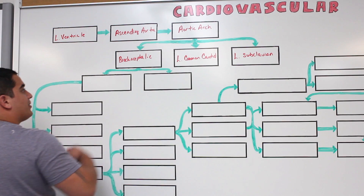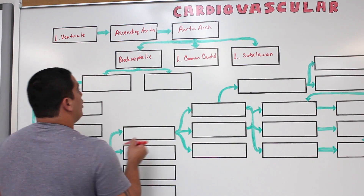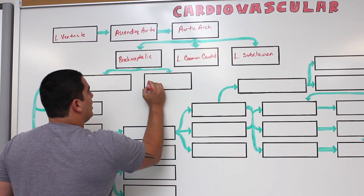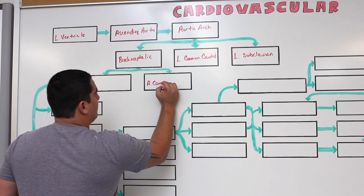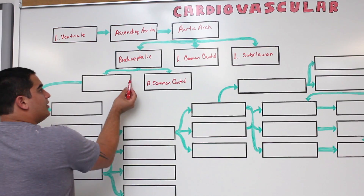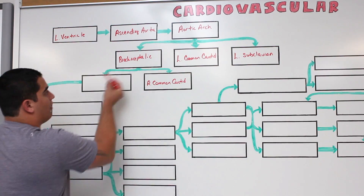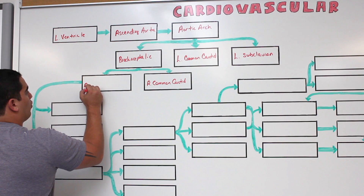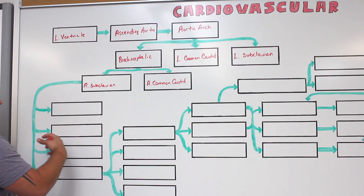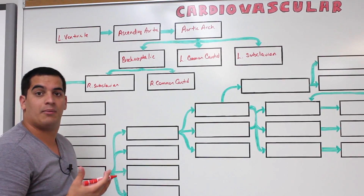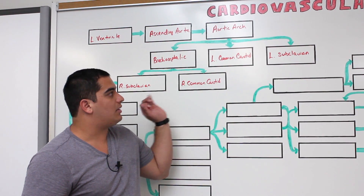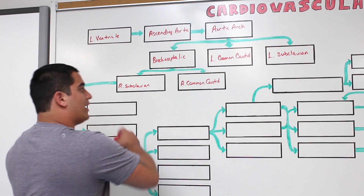The brachiocephalic continues and it splits into two other vessels. You saw the left common carotid — the right one is going to be the right common carotid artery. And since there's a left subclavian, the right subclavian comes off the brachiocephalic. Now we're going to follow the right subclavian all the way down to the fingers. Everything we're saying about the right subclavian would apply to the left subclavian — we're just focusing on the right side.